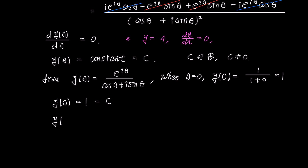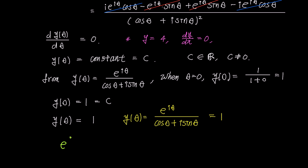Since y of theta is always the same constant value c, and we found that y of 0 equals 1, the constant c is indeed 1. In summary, y of theta equals 1, and consequently e to the power of i theta over cosine theta plus i sine theta equals 1 as well. Therefore, e to the power of i theta equals cosine theta plus i sine theta.